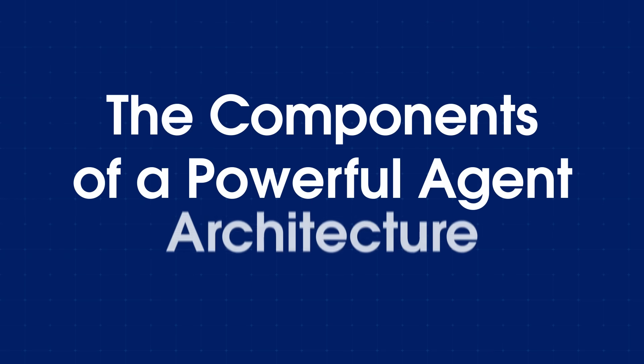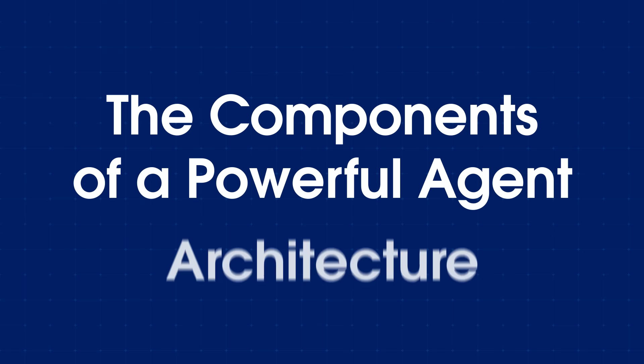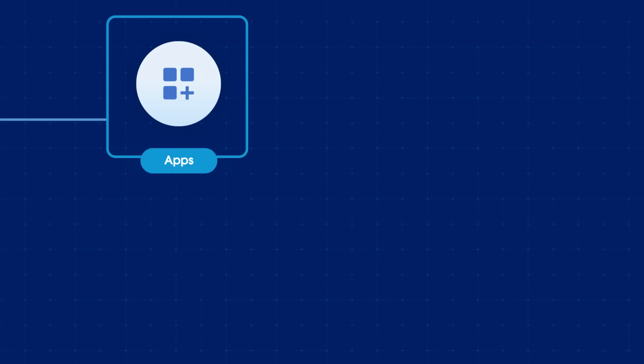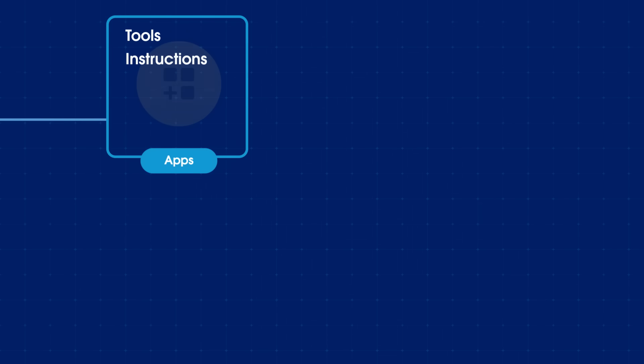Let's look at the components you need to deliver a powerful agent architecture. First up, your apps. This is more than just giving an agent a key to your systems. It's about providing the tools and instructions, the workflows, APIs, and custom code that your agents need to execute tasks.